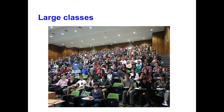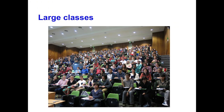Here's an example of one of my classes. It's a bit like Where's Wally, isn't it? If you can find me, you get like five points. At UNSW, we have very large classes — about 55,000 students — and this is a large first-year class where we try to teach first-year mathematics: calculus or algebra. It's a tough gig.